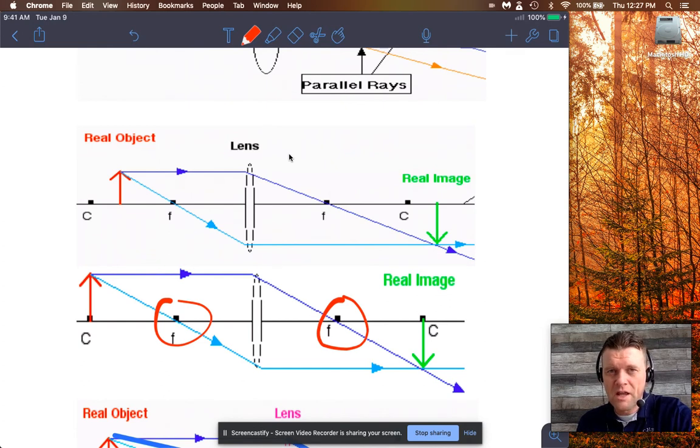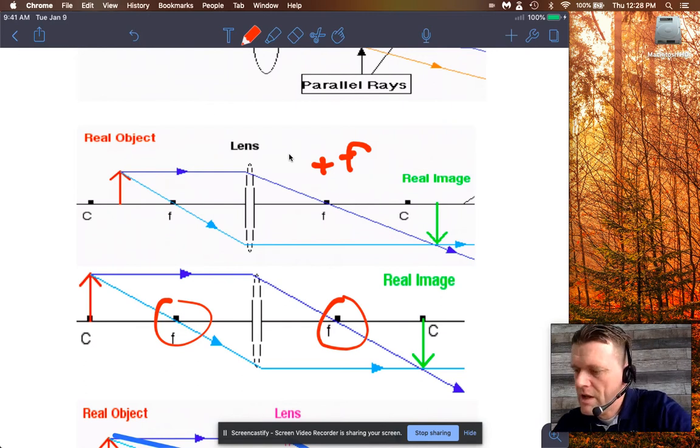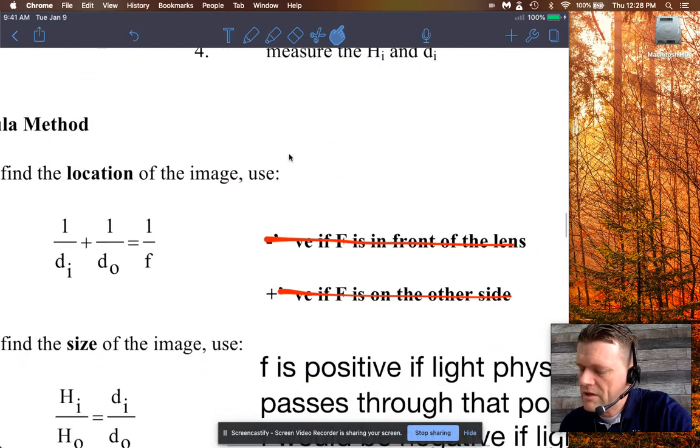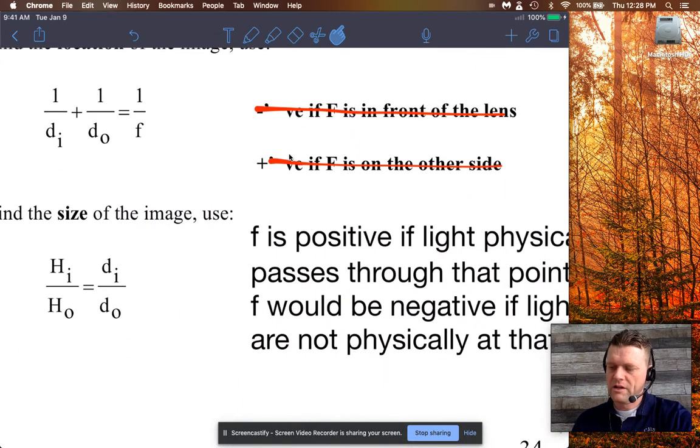And if it does, then f would be positive in the formula. So for a converging lens, f is always positive. So when you're dealing with the formulas for a lens, the focal length is always positive for a converging lens. For a diverging lens it's actually negative, and I'll show you that in a second too.